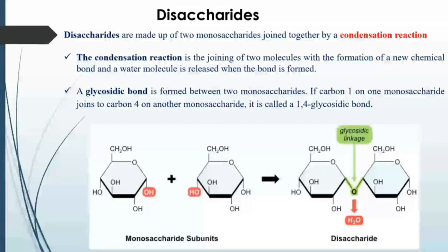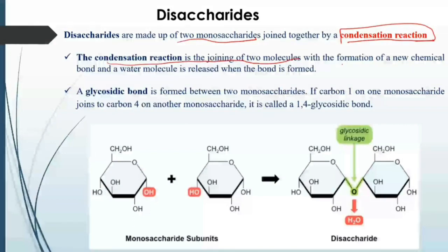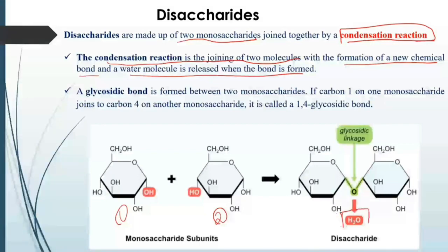Disaccharides are made up of two monosaccharides joined together by a condensation reaction. In the condensation reaction, two molecules join with the formation of a new chemical bond and a water molecule is released. When the two monosaccharides bond together, the water molecule comes out. This linkage is known as a glycosidic linkage.